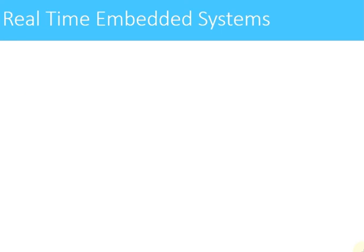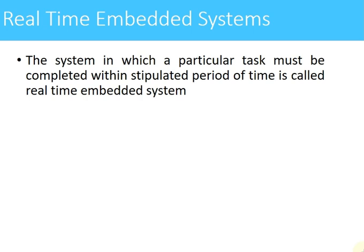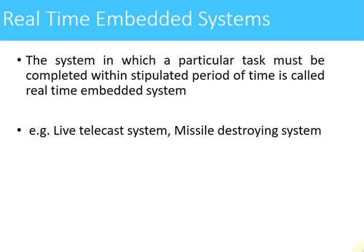Next we have real-time embedded systems. These are systems in which a particular task must be completed within a stipulated period of time. One important thing to remember is that real-time does not mean fast — it means the output is always predictable. An example is a live telecast system or a missile-destroying system. In the case of a missile-destroying system, the output must come within a particular amount of time; it must follow the deadline. If the deadline is not followed, the results can be catastrophic.